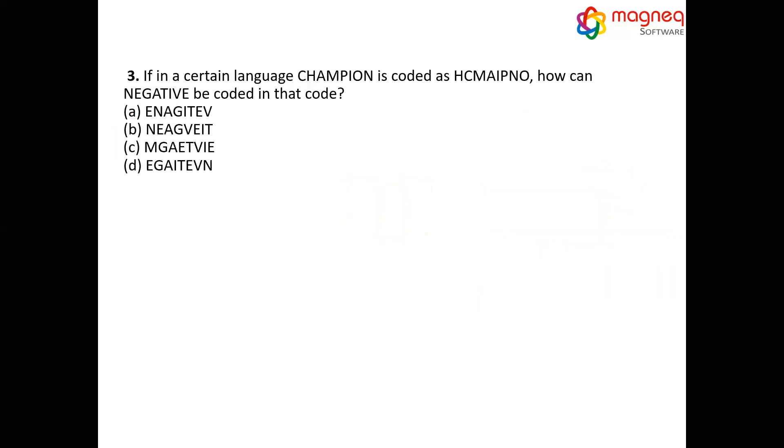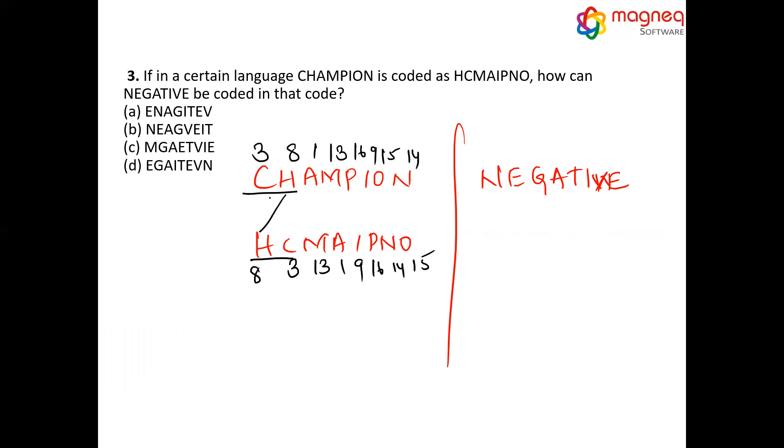Moving forward to next question. If in certain language, CHAMPION is coded as H, C, M, A, I, P, N, O. Now, what is a code for NEGATIVE? What is the first priority? We have to see the alphabet places. C3, H8, A1, M13, P16, I9, O15 and November 14. If you clearly observe H8, C3, M13, A1, I9, P16, N14, O15. Now, by using common sense, if you clearly observe first two letters here and the first two letters here, these two places are interchanged. This is also same, interchanged and this is also same and this is also same.